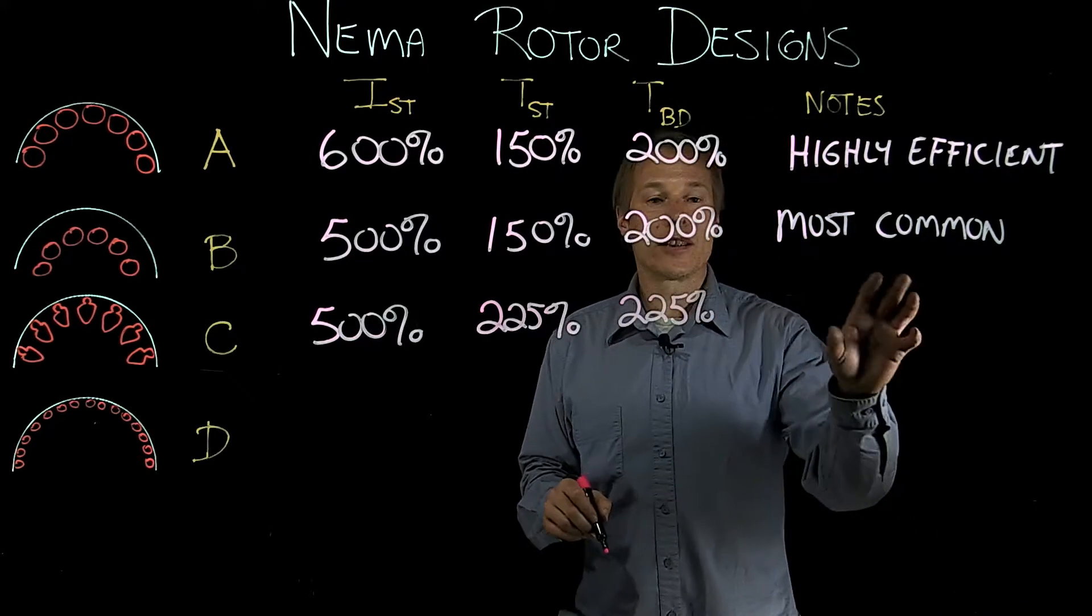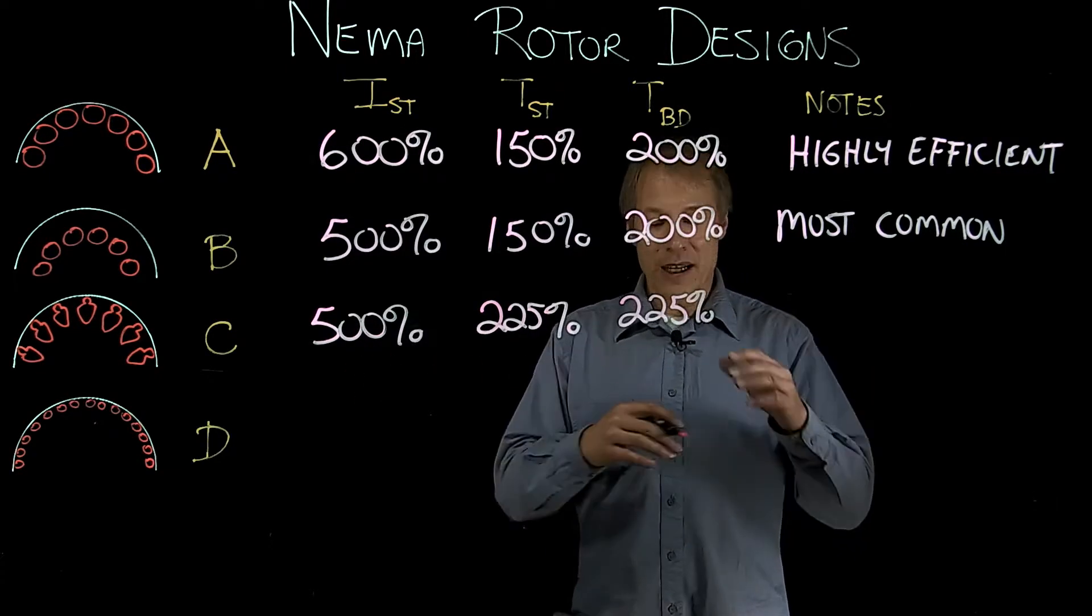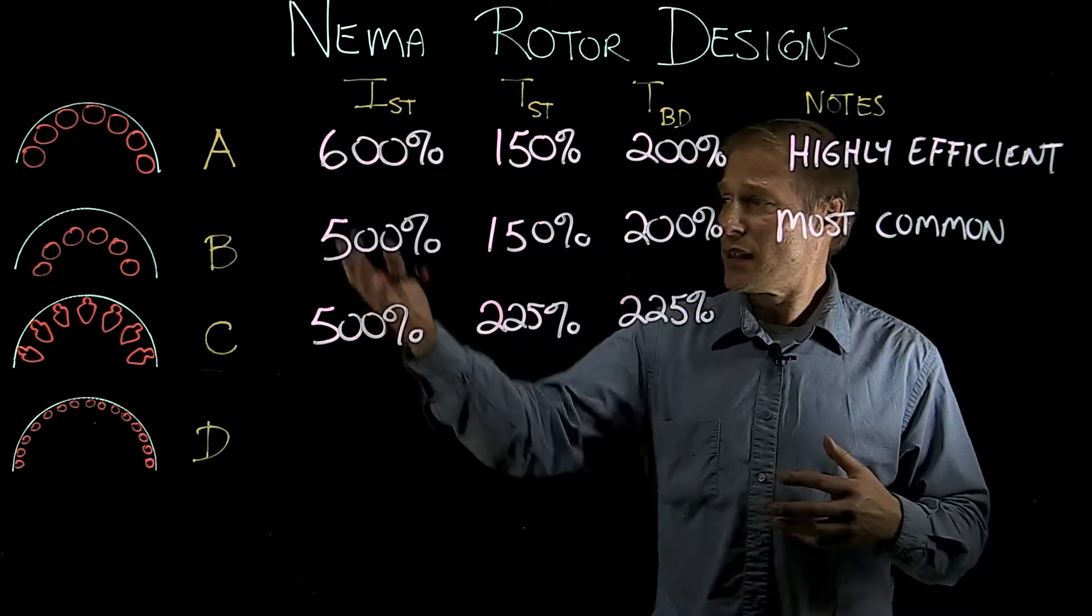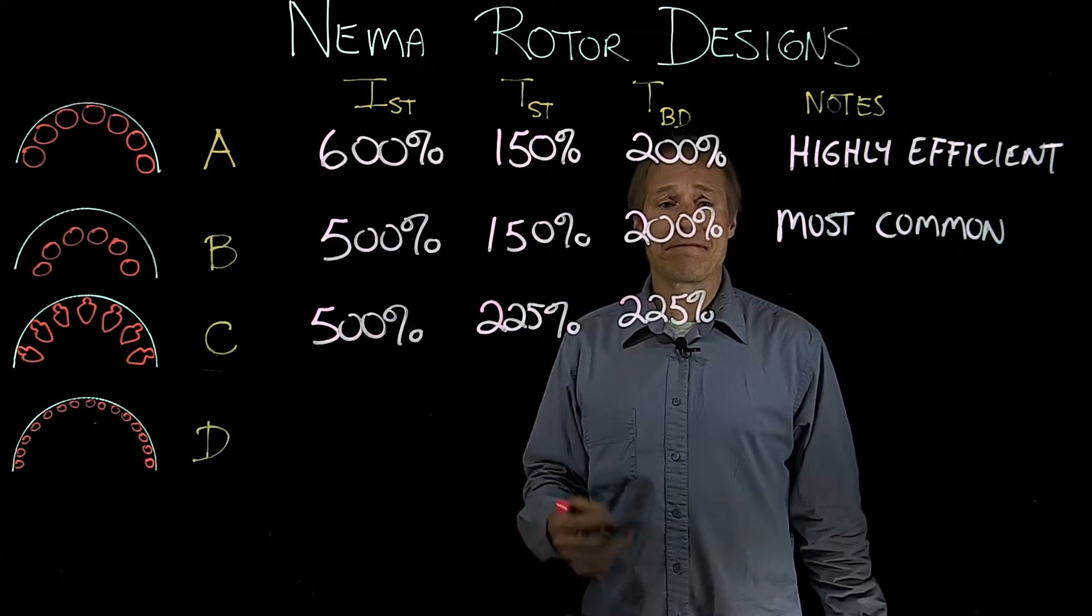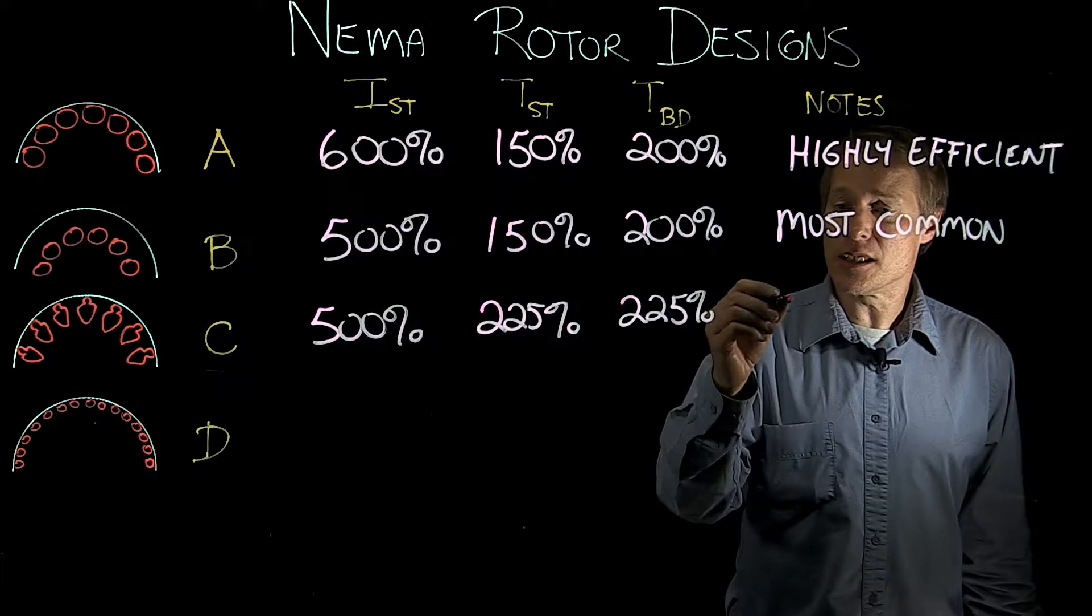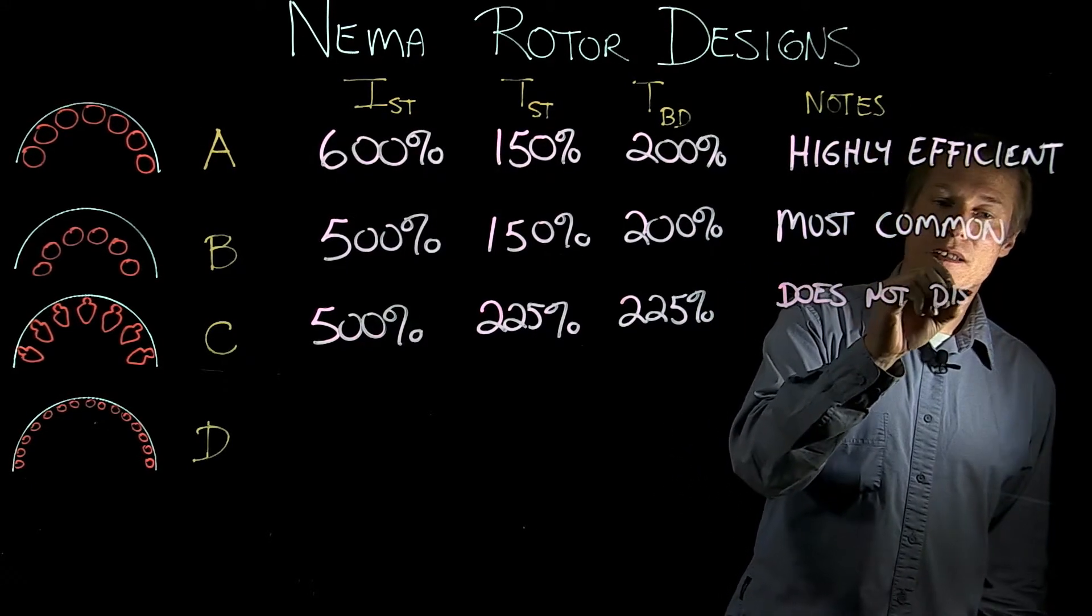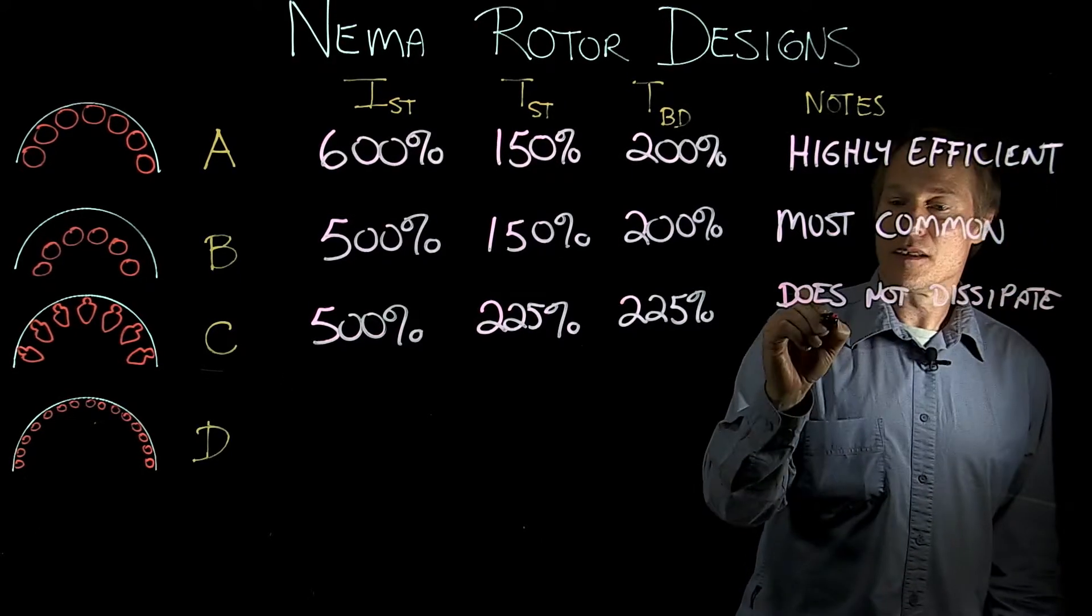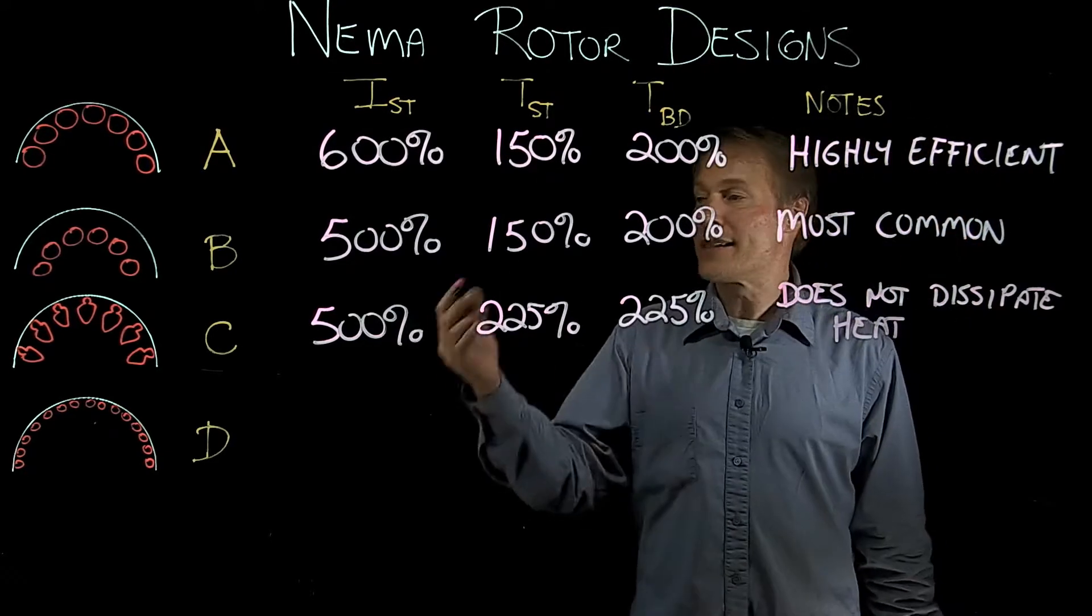Now as far as the characteristic, beside it being a double squirrel cage design, because of that double design, it's not going to dissipate heat as well as the single cage designs, so it heats up a little bit more. So it doesn't dissipate heat, or heats up, let's say, does not dissipate heat as well as the A or B.